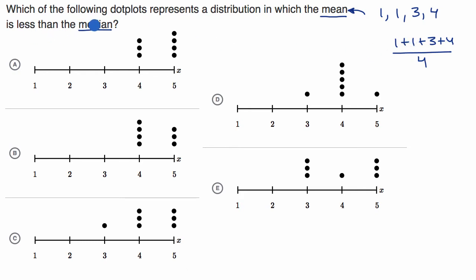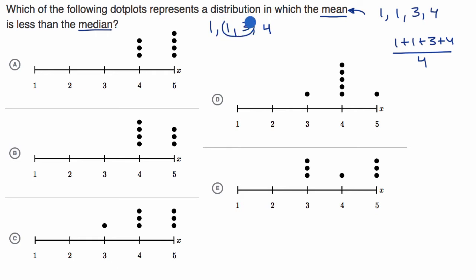The median is the middle number. So if we take those same four numbers and order them — one, one, three, four — when you have an even number of numbers, you look at the middle two numbers, which in this case are one and three, and then you go halfway between them. Halfway between one and three is two, so the median would be two.